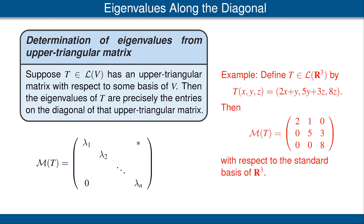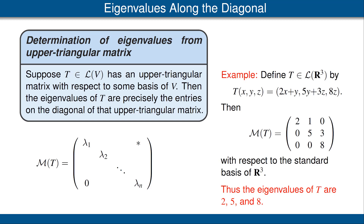Let's look at an example. Suppose T is the operator on R3 defined by the equation shown here. We've encountered this operator T earlier in this video. We saw then that the matrix of T is the matrix shown here, which is an upper triangular matrix. The entries on the diagonal of this matrix are 2, 5, and 8. Thus, this theorem tells us that the eigenvalues of T are precisely the numbers 2, 5, and 8. By the way, the result shown on this slide is valid for both real and complex vector spaces. However, on a real vector space, there might not be any basis of V with respect to which T has an upper triangular matrix.